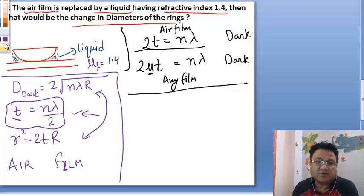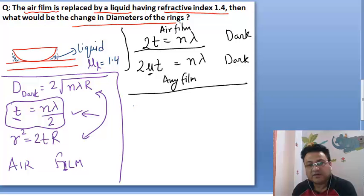Now it is easy to do. I will compare the formula for air film with one having refractive index. Mu is given as 1.4. It is asking what is the change in diameter of the ring, so we will talk about dark formula.